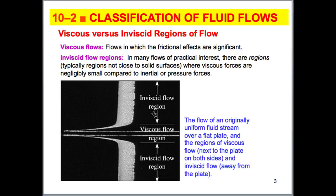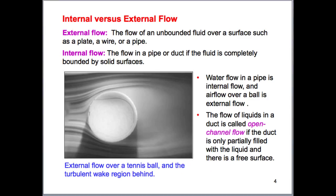This inviscid flow region allows us to perform a lot of analyses on flow over different types of bodies, and also we're able to derive a relationship for pressure and velocity that's very useful, which we'll be talking about in the following chapter.